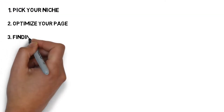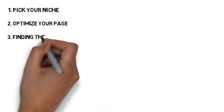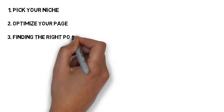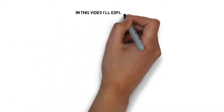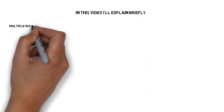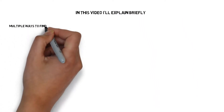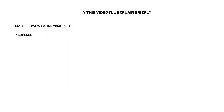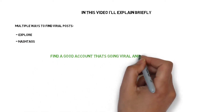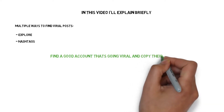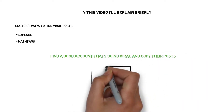Once you're done setting everything up, we actually need to find content to post — this might be the most important step. There are multiple ways to find viral posts: you can search the explore page, hashtags, or other accounts. But the way I like to do it is find a good account that is already going viral within that niche and search for the best performing posts on there.